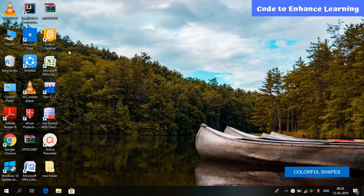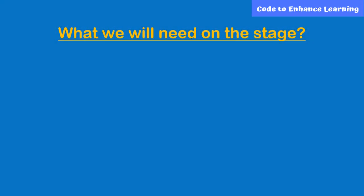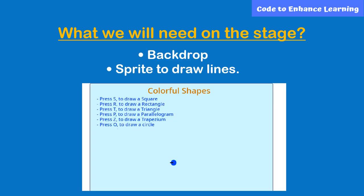Here I am going to use offline versions of Scratch for this lesson. Before starting, I want to ask you a question. What we will need on the stage? We need a backdrop and a sprite which will draw lines to make different colorful shapes.